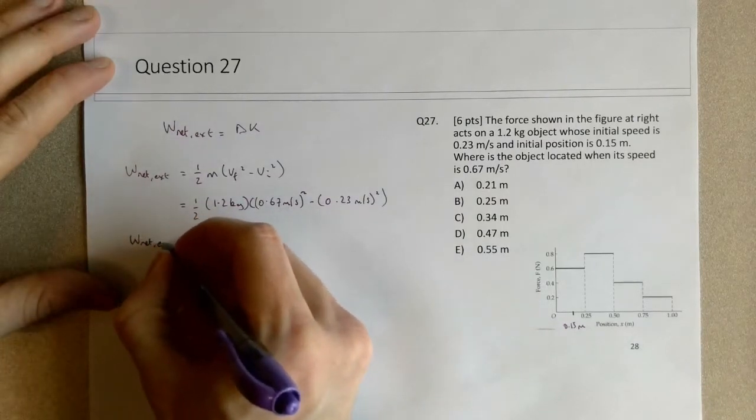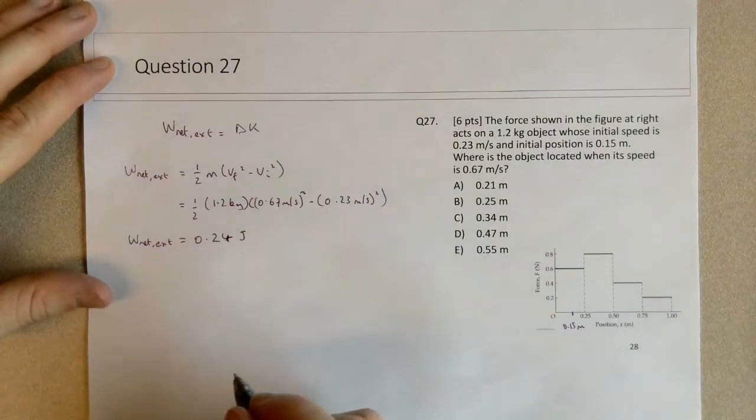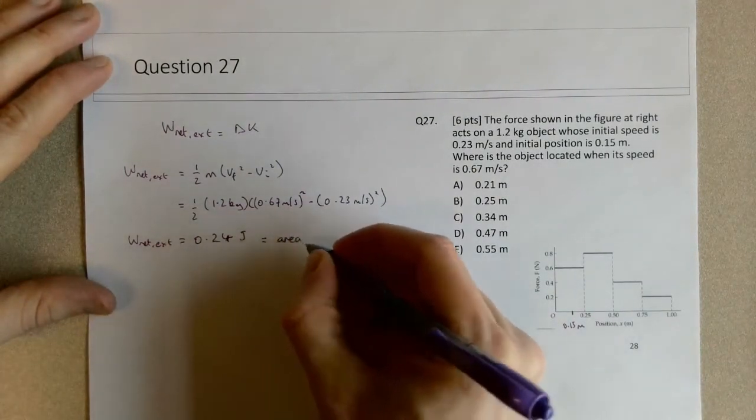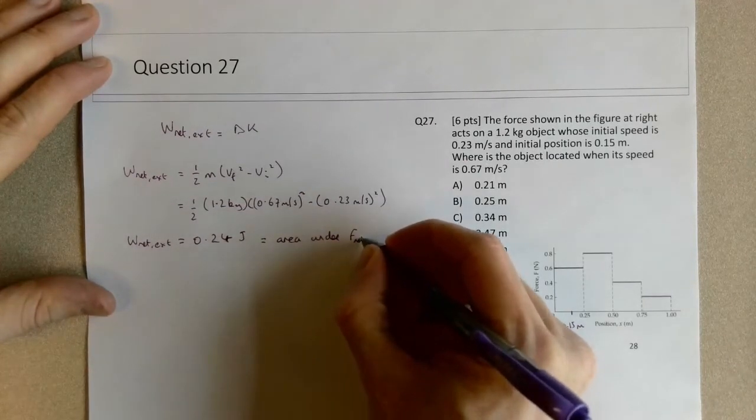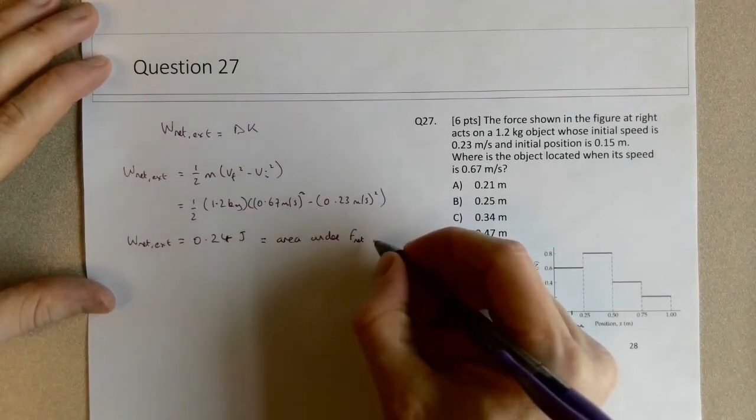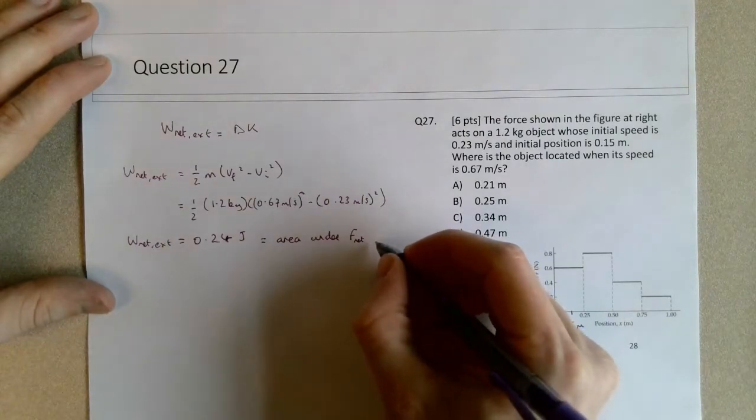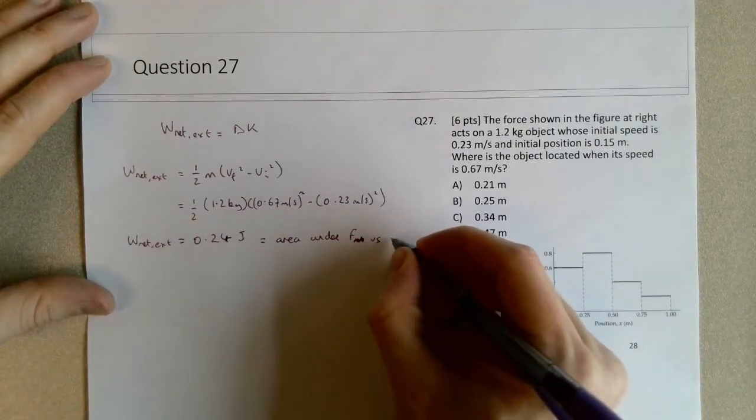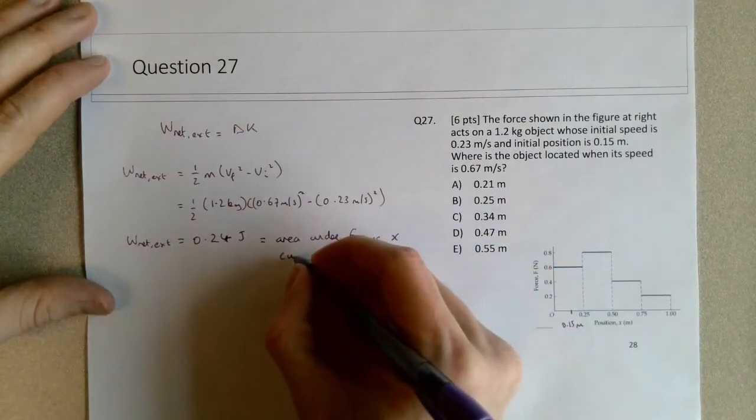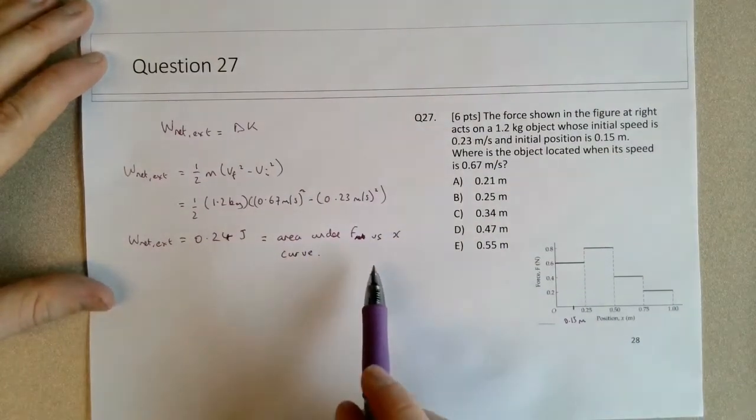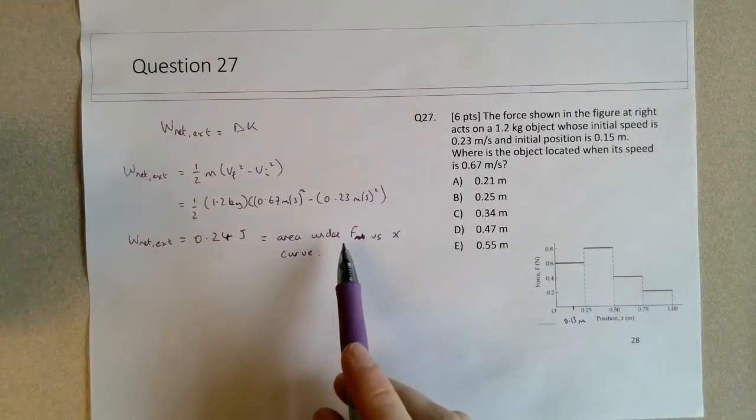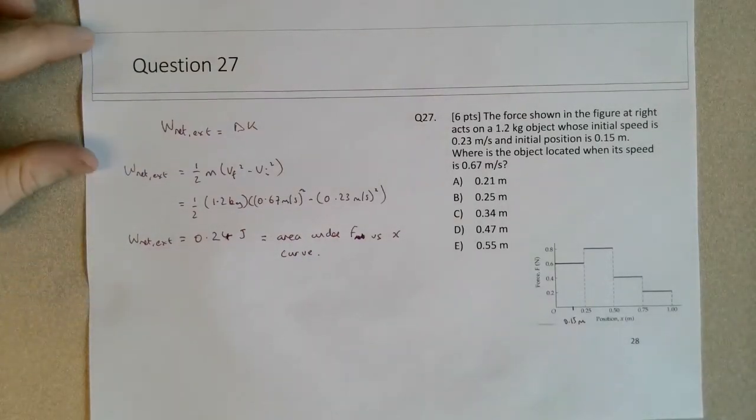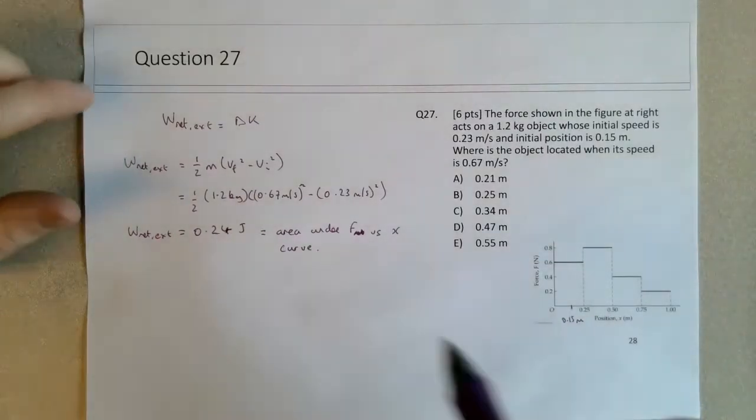So that's the net work, and this equals the area underneath the curve. Area under F—technically it should be F net versus X curve. You can explicitly say F net, but this F is the only force working on the object. So that's what we know.